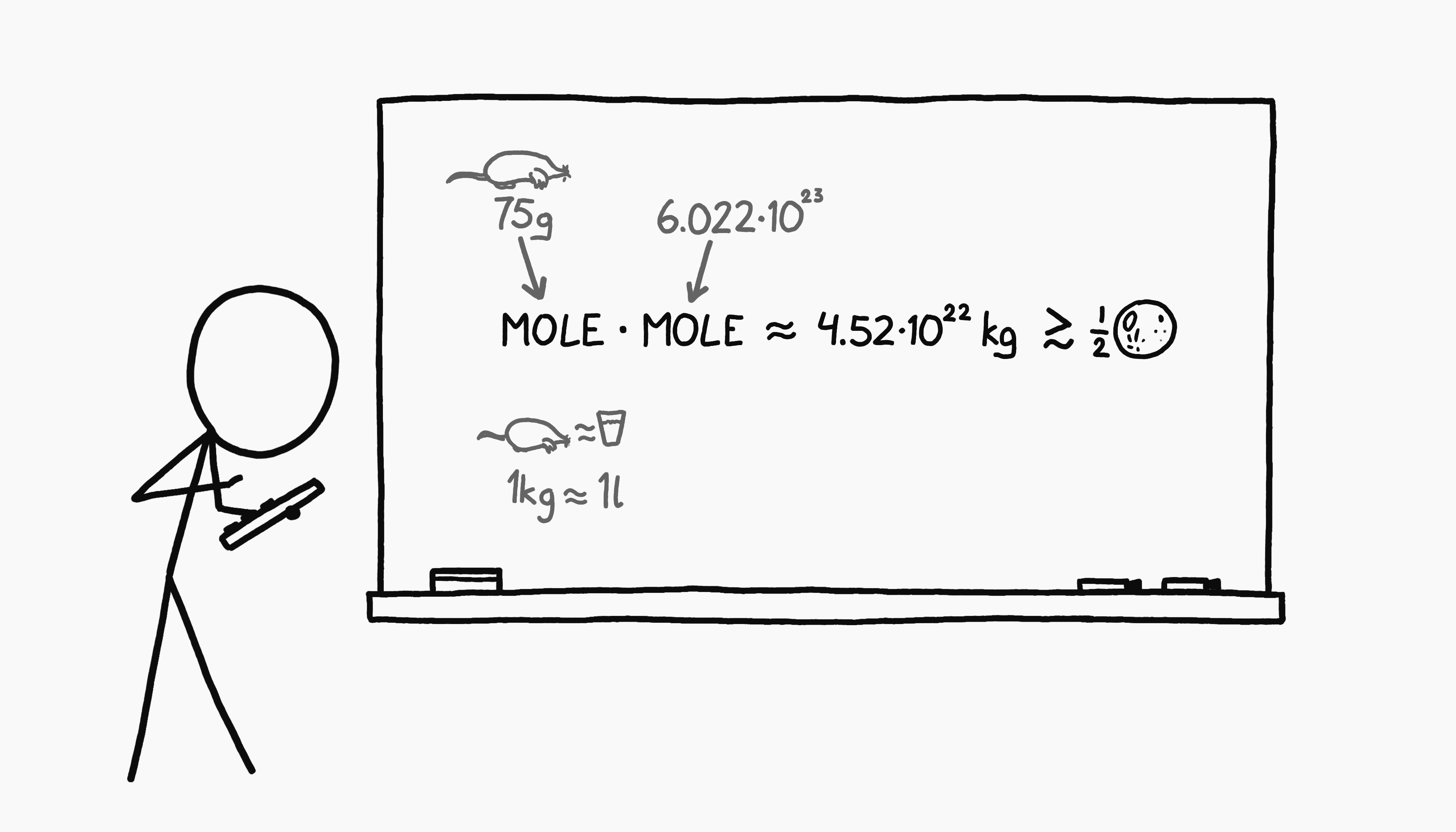Mammals are largely water. A kilogram of water takes up a liter of volume, so if the moles weigh 4.52 times 10 to the 22 kilograms, they'll initially take up about 4.52 times 10 to the 22 liters of volume.